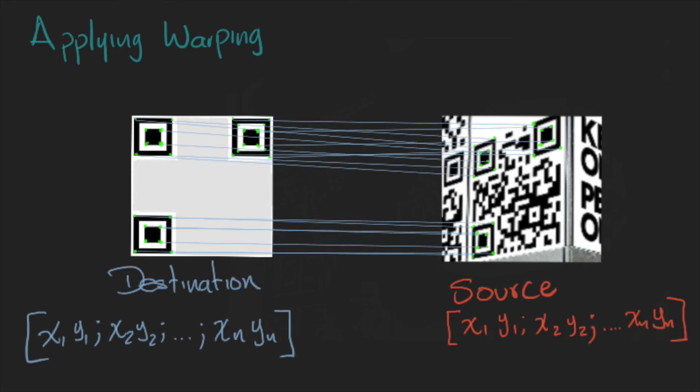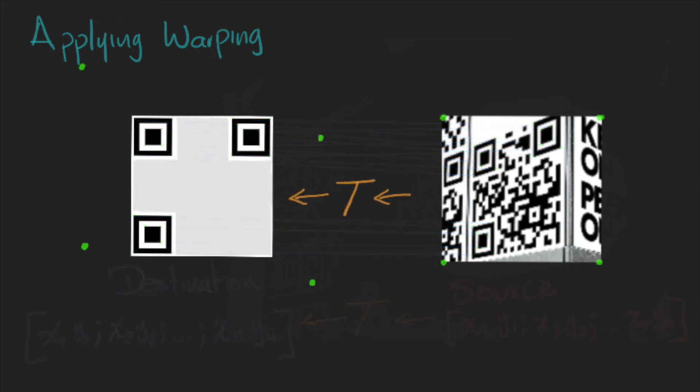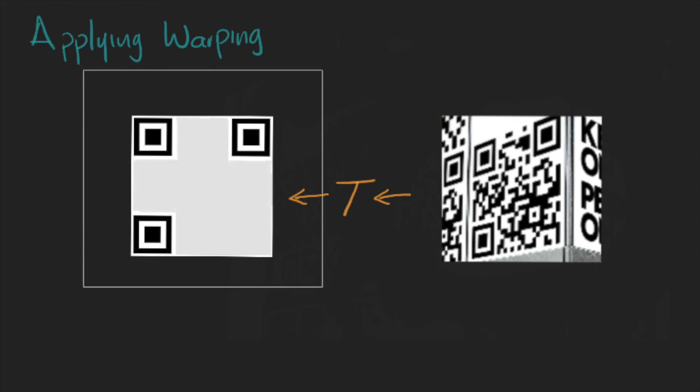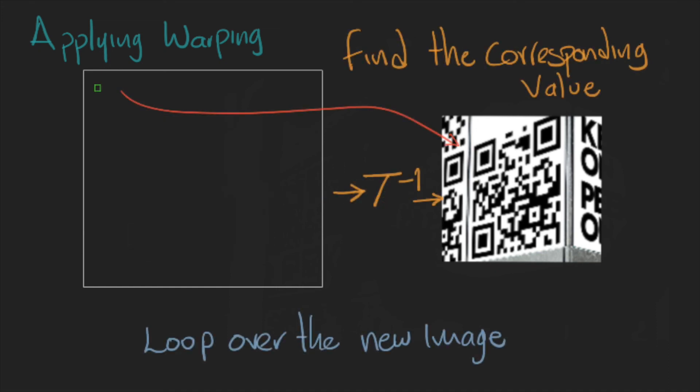We compute the warping matrix, and taking the corners of the template, we will find the limits of the new image. We create an empty image that covers those limits, and then we loop over the new image.